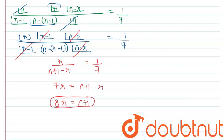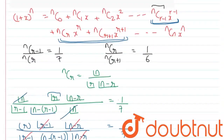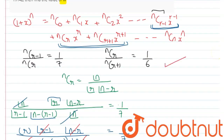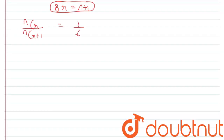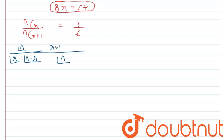We have got one relation in n and r. Now find the second relation using the equation nCr / nC(r+1) = 1/6. We expand this as [n! / (r! · (n−r)!)] divided by [n! / ((r+1)! · (n−r−1+1)!)] equals 1/6.